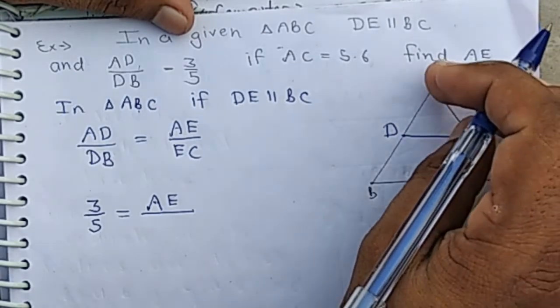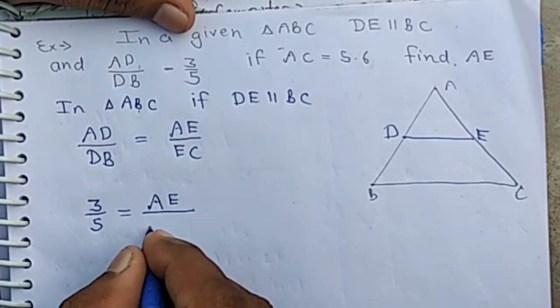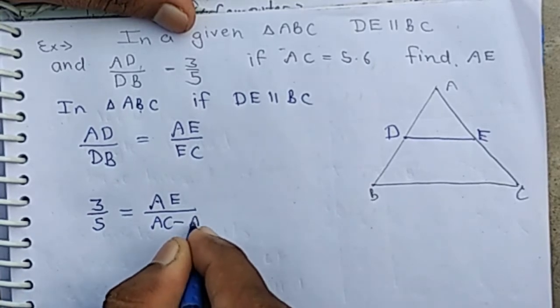If we subtract AE from AC, we get CE. So in place of CE, we can write AC minus AE.